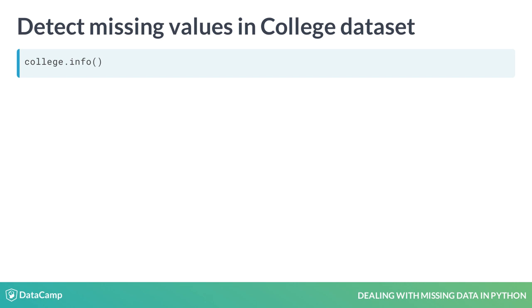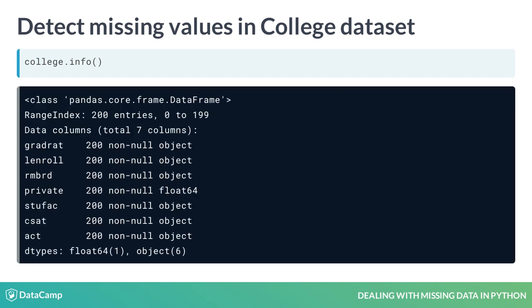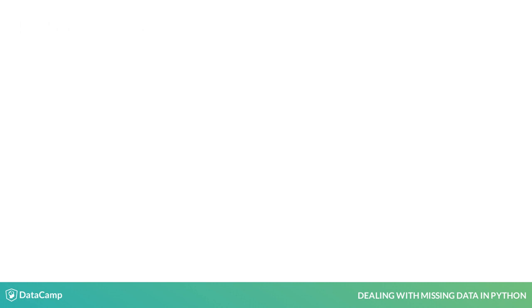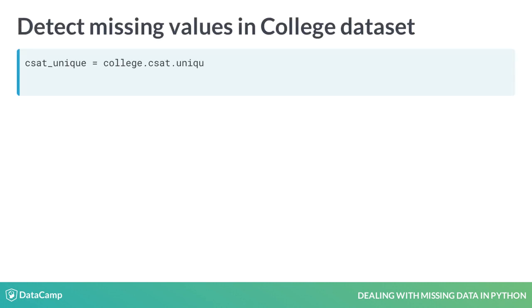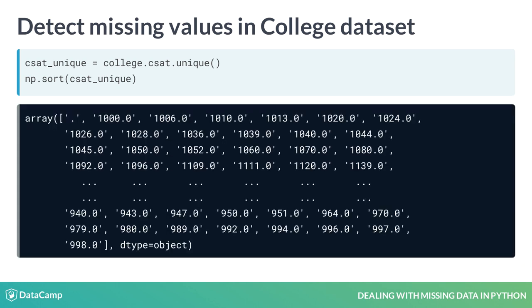We'll use the info() method to get a gist of the data set. Something's odd here — all the columns except 'private' are of object type, although they are supposed to be float. We can further explore and confirm by finding the unique values in one of the columns; this way we can find any non-numerical values. Let's apply the unique() method on the column csat and sort them using np.sort. From the output, you can clearly observe that period is the only string value present. Hence, we need to replace it with NaN.